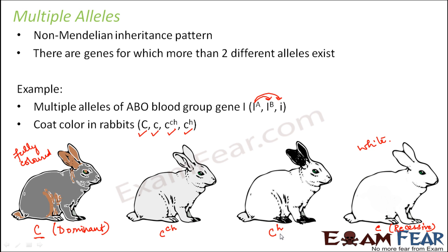The last allele, C^H, represents the Himalayan rabbit. It produces a white-colored coat, but with some blackish borders on the ears and feet. C^H is dominant only over the recessive small c; it is dominated by both capital C and C^CH.